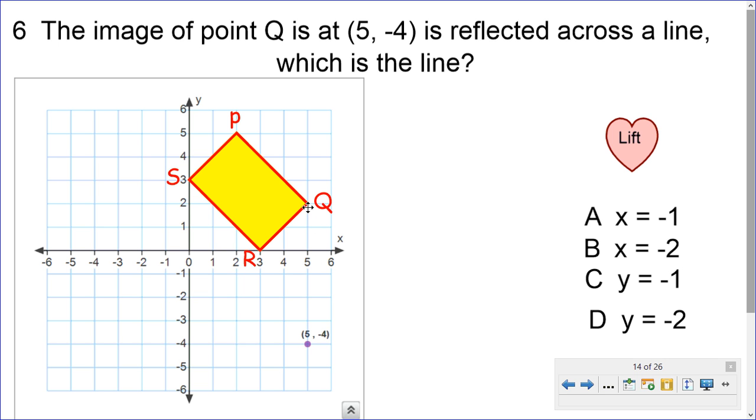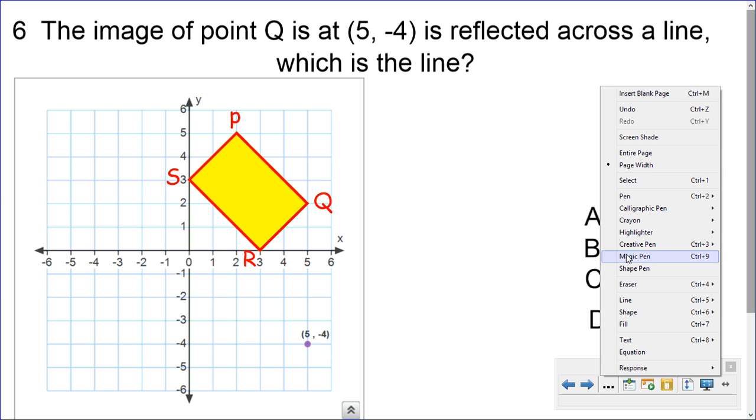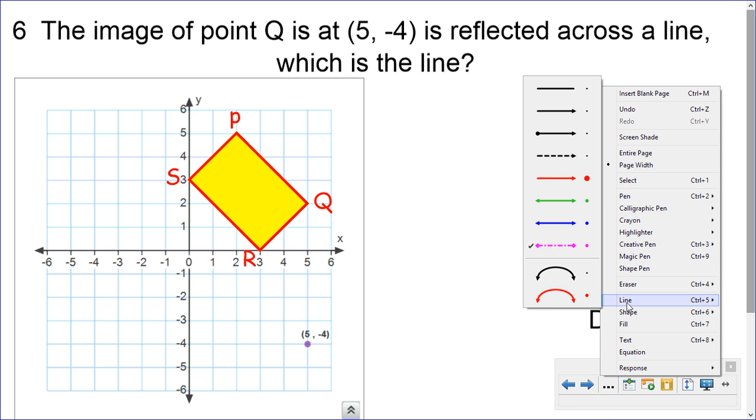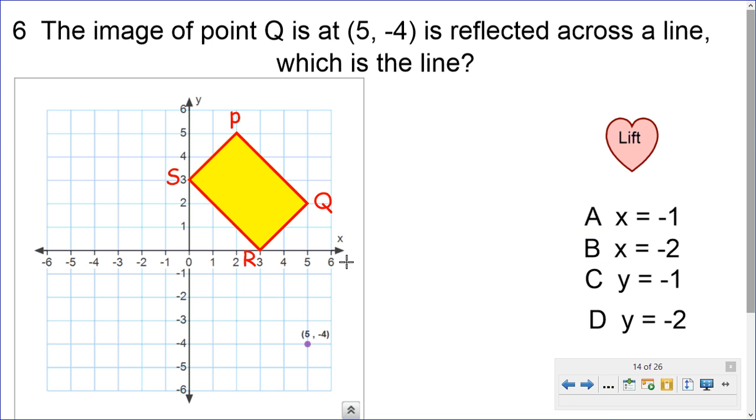So, here's 5, 2, and 5, negative 4. So, we want to see which line is it reflected over. Well, let's get our line tool again, and look at the x-axis, because it seems like the mirror is against the x-axis. So, let's get our line tool. So, it's like the mirror is laying down here.